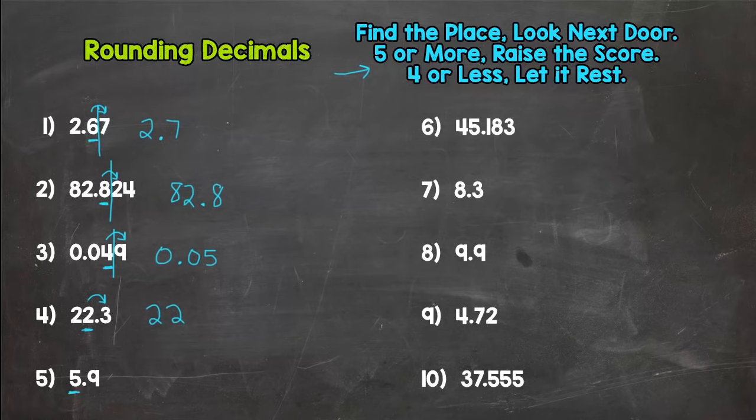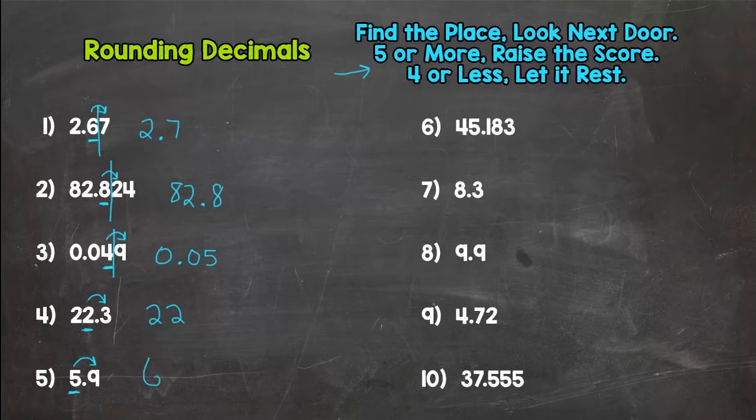For number five, nearest whole number again. We have five and nine tenths. Rounding to the nearest whole number is basically asking: is this closer to five or six? Let's look next door — that nine says add one more, or round up. So we round to six.